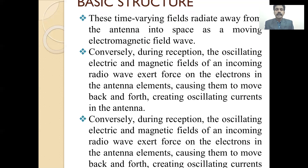Therefore, these time-varying fields radiate from an antenna into free space, moving as electromagnetic field waves. This electromagnetic field consists of both electrical and magnetic fields. During the receiving side, the oscillating electric and magnetic fields of incoming radio waves automatically exert force on electrons in the antenna element, causing them to move forward and backward, creating oscillating currents in the antenna.